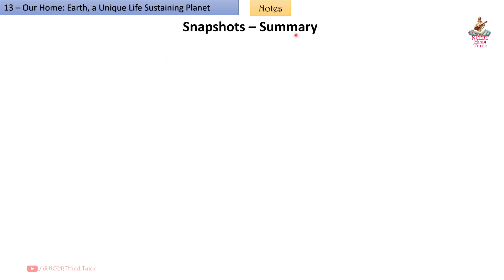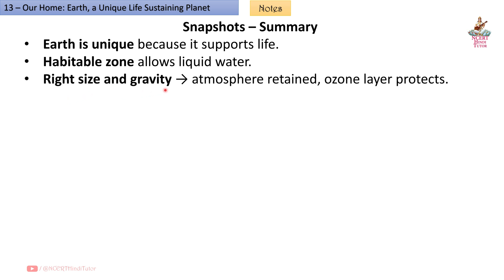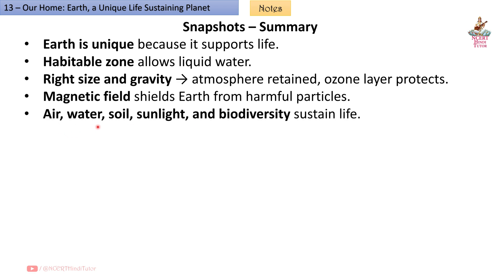Snapshots - Summary: Earth is unique because it supports life. Habitable zone allows liquid water. Right size and gravity mean atmosphere is retained. Ozone layer protects. Magnetic field shields Earth from harmful particles. Air, water, soil, sunlight and biodiversity sustain life.